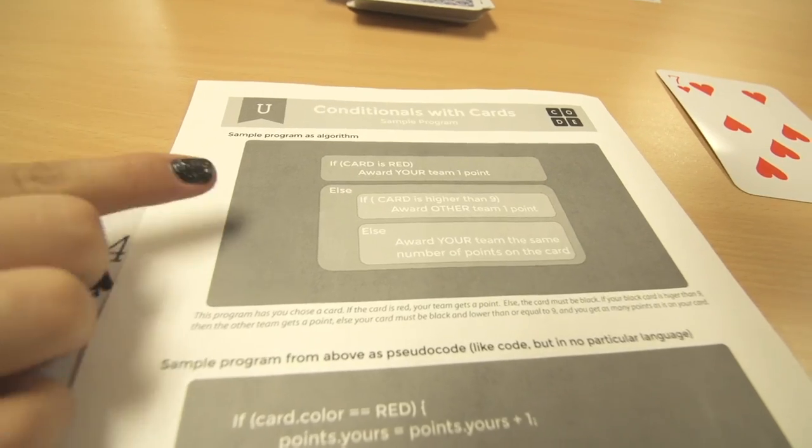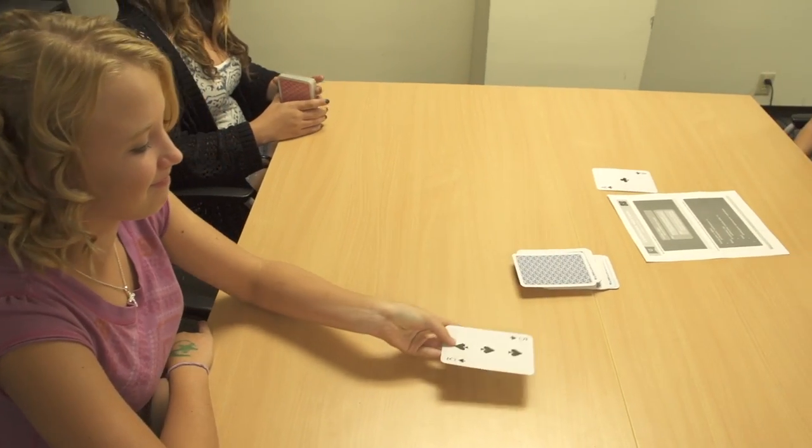Conditionals are what make computers seem smart. A computer program that includes conditionals can react to the user and change its course of action. Think about your favorite video game. Do you earn more points for some actions than you do for others? This occurs because the computer is using conditionals — it's the way a computer makes a decision. How about: if you hit the target you earn ten points, else you lose three. When you know how conditionals work you can create all kinds of exciting games.